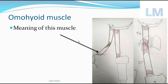Why is it called omohyoid? What is the meaning of 'omo'? Omo means shoulder. The shoulder blade bone is the scapula, and this muscle is coming from the scapula. We could call it scapulohyoid, but all books mention omohyoid. Because it's coming from the shoulder blade bone — the scapula — to the hyoid bone, its meaning is: from shoulder to hyoid. Omohyoid.